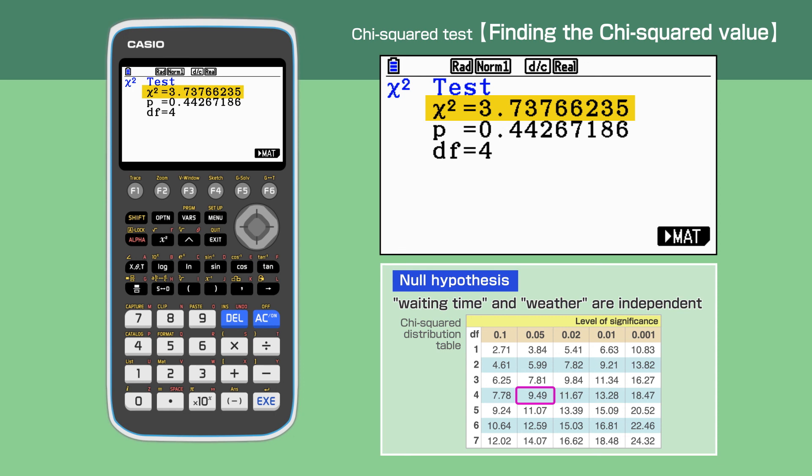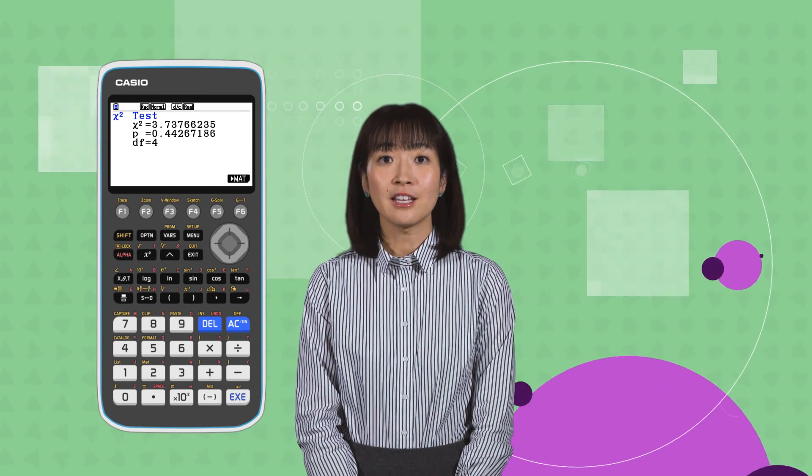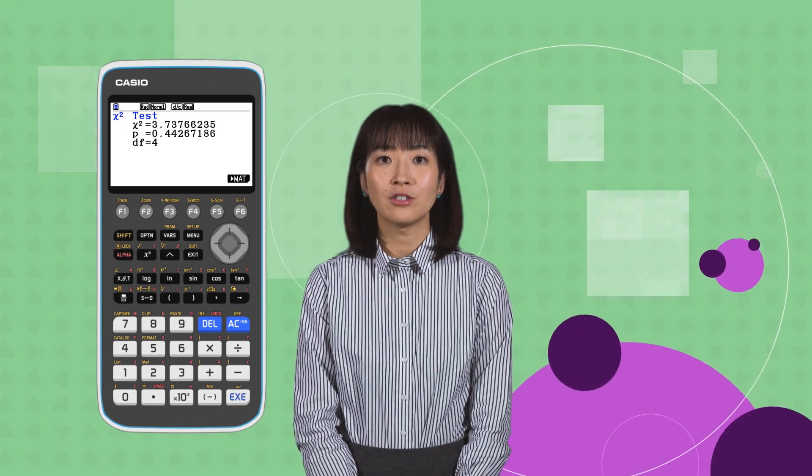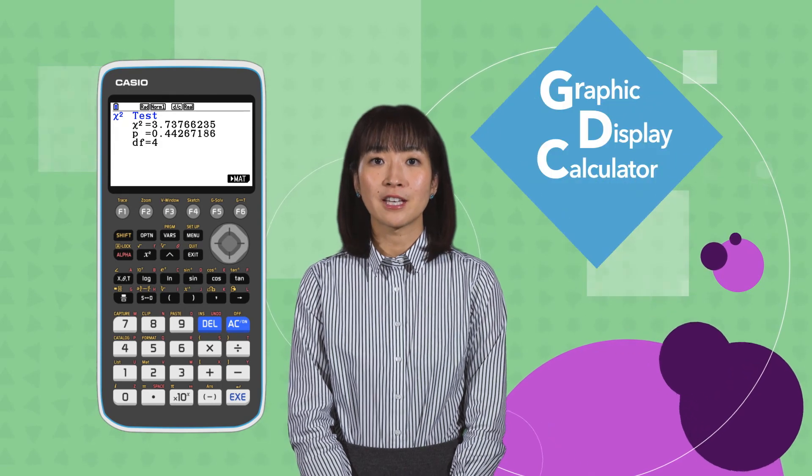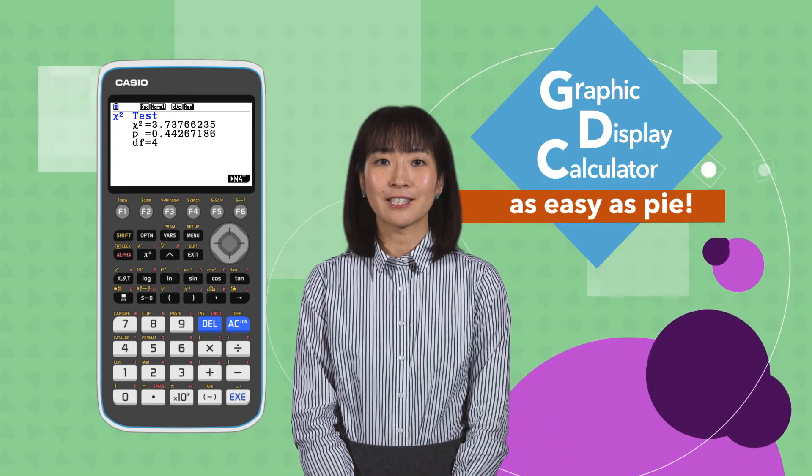In this video we have shown how to calculate chi-squared values using graphic display calculator. As easy as pi.